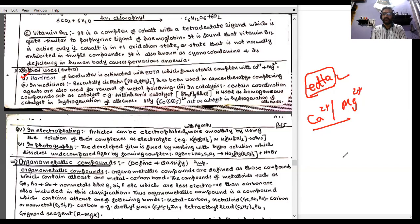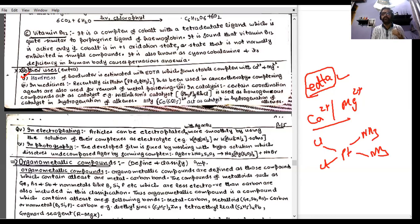In medicine, cisplatin is an important coordination compound — the 'cis' configuration means the two chlorine atoms are on the same side and the two ammonia ligands are on the same side. This complex has been used in cancer therapy. Complexing agents are also used for the removal of metal poisoning; if the body has excess toxic metals, complexing agents are used to inactivate and remove them.